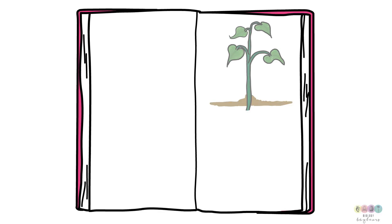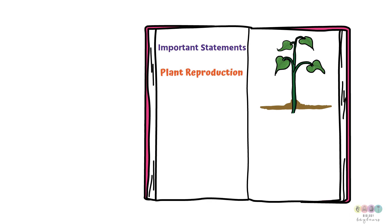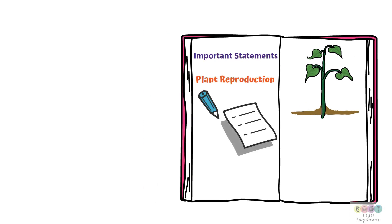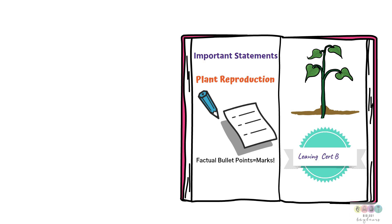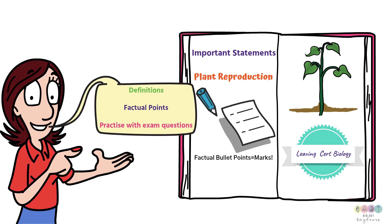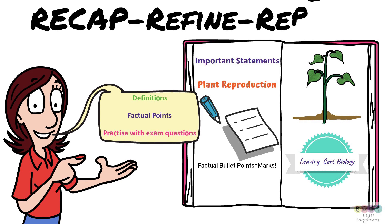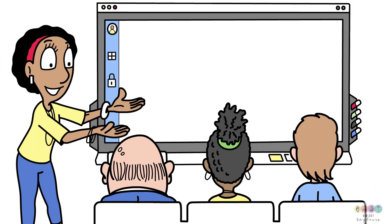Sexual reproduction in a flowering plant. This video brings to your attention two important statements which you should include, particularly related to gamete formation. As with all answers, please use factual bullet points to get your marks. Definitions and diagrams are so important, so practice with exam questions. Recap your topic, refine your knowledge, and repeat the process often.